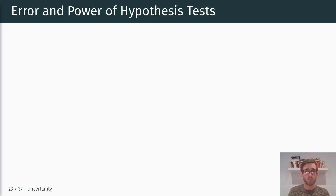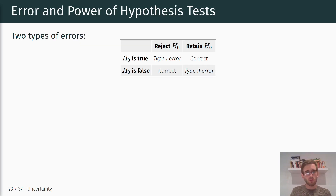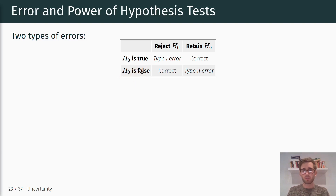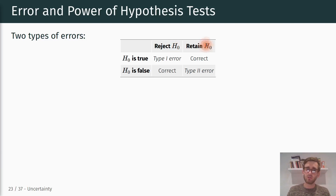In this context we can make two different types of errors, related to either falsely rejecting or falsely retaining the null hypothesis. We can think about this in a two-by-two matrix where on one axis we have the true state of the world — whether the null hypothesis is actually true or false in the population — and on the other axis we have our decision based on the hypothesis test: to reject or fail to reject the null hypothesis.